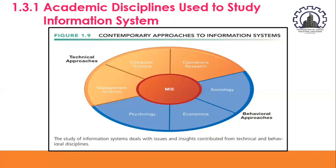Computer science is concerned with establishing theories of computability, methods of computation, and methods of efficient data storage and access. Management science emphasizes the development of models for decision-making and management practices. Operations research focuses on mathematical techniques for optimizing selected parameters of organizations, such as transportation, inventory control, and transaction costs. The behavioral approach does not ignore technology — in fact, information systems technology is often the stimulus for a behavioral problem or issue — but the focus is generally not on technical solutions. Instead, it concentrates on changes in attitudes, management, and organizational policy and behavior.